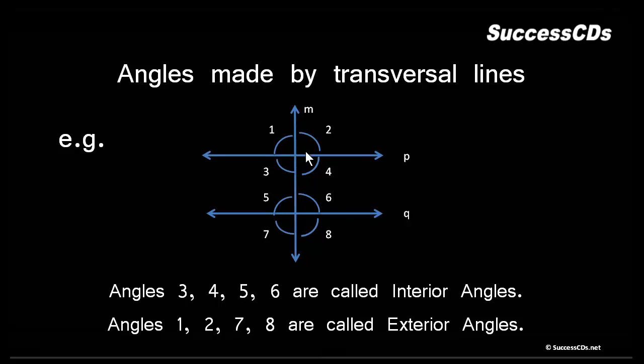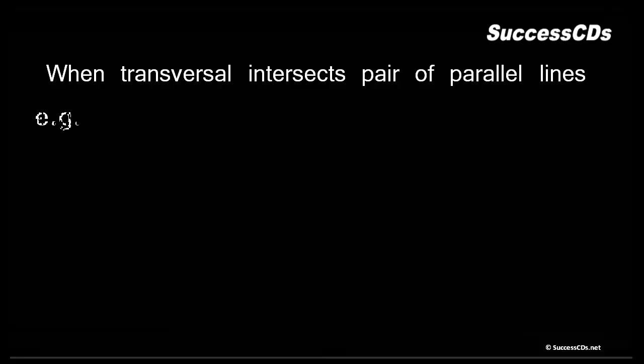Angles 1, 2, 7, and 8 lie beyond the lines, therefore these are known as exterior angles. Now let's take a look at what happens when a transversal intersects a pair of parallel lines and what kind of angles we get. The most important are corresponding angles.